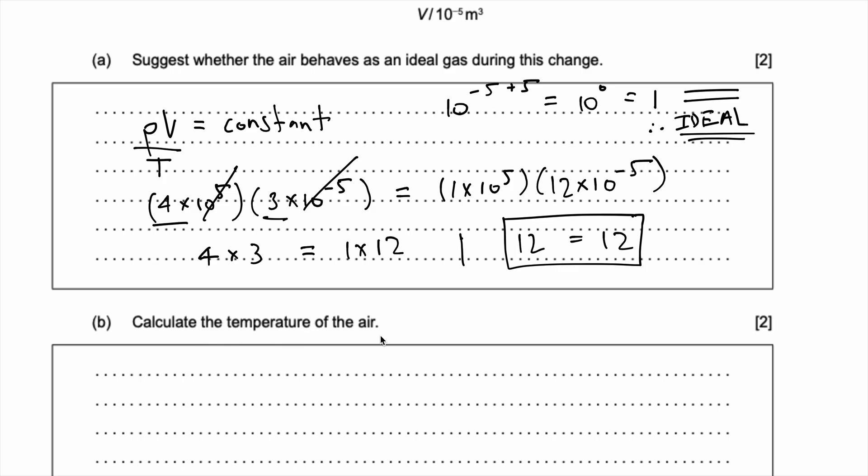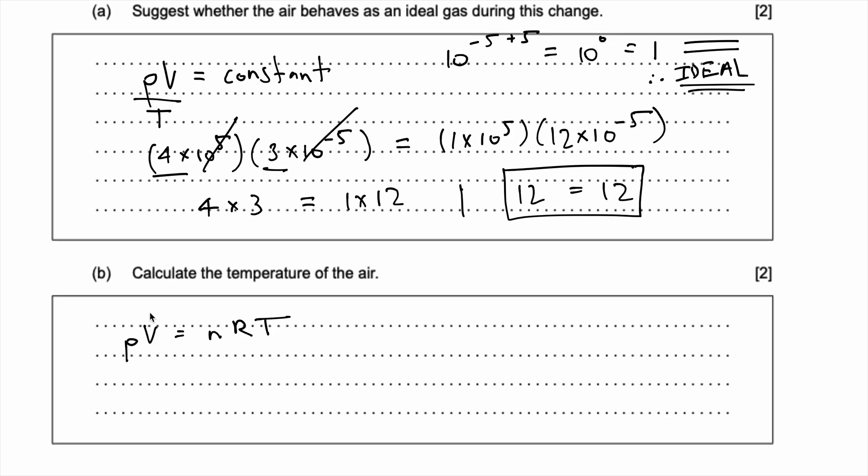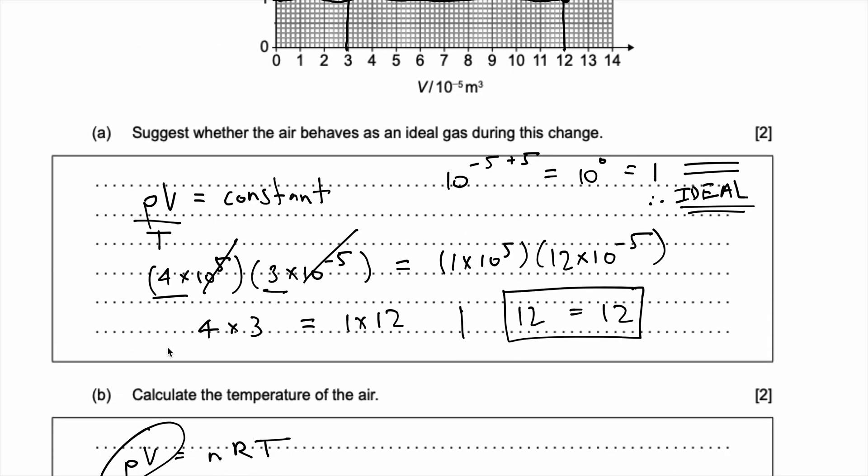Calculate the temperature of the air. Now, how do we do this? We know the formula. PV is equal to nRT. This is given in your formula booklet, right? So, how can I use this to calculate the temperature of the air? Well, I know PV, because PV is just what we figured out in the previous question, it's just 12, no matter which point you take, it's 12.